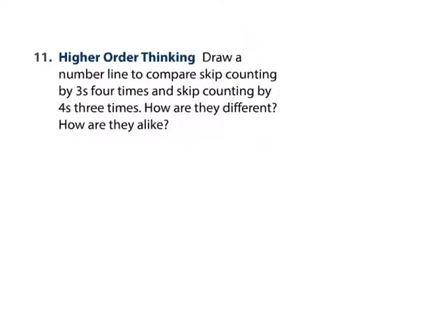Draw a number line to compare skip counting by 3s 4 times and skip counting by 4s 3 times. How are they different? How are they alike?